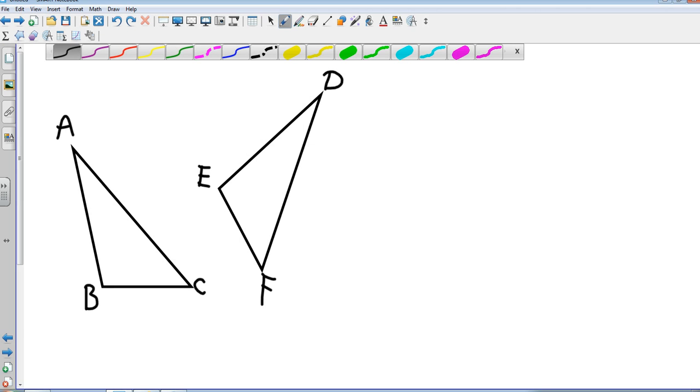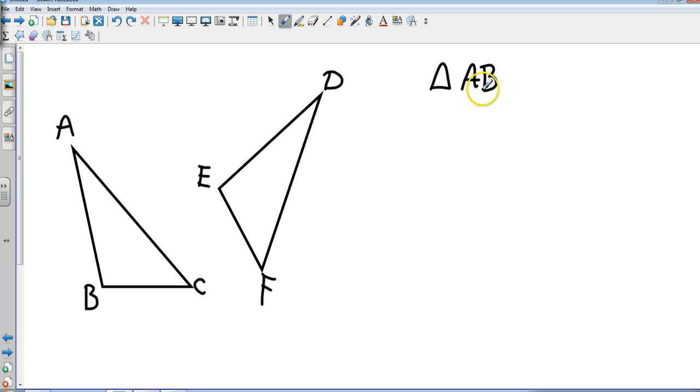Okay, so let's look at an example. I've got triangle ABC and I've got triangle DEF. So let's go ahead and write those up here: triangle ABC and triangle DEF. Some things they might do - they might say that is equal to that, and then they could tell you that angle A is 35 and angle D is 35, and angle C is 45 and angle F is 45.